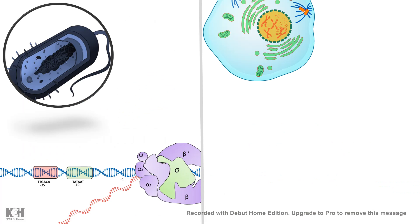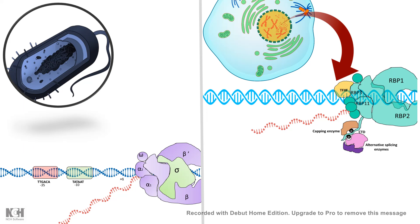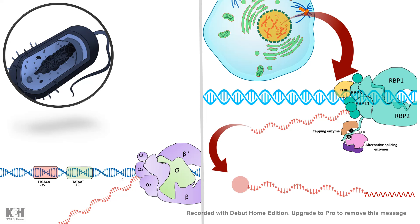Unlike prokaryotes, in eukaryotes the process of transcription is pretty complicated. It involves elongation but also quite a lot of processing during transcription, like alternative splicing, forming a 5' m7G cap, and polyadenylation. All these modifications have their own significance and help the RNA in terms of stability and many other factors.